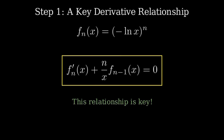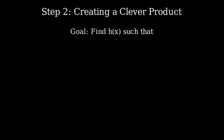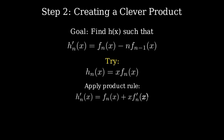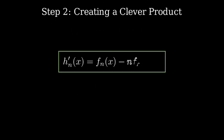Now here's where we get clever. We need to find a function whose derivative gives us exactly what we want: h' = f_n(x) - n · f_{n-1}(x). Let me try defining h as x · f_n(x). Applying the product rule: h_n' = f_n(x) + x · f_n'(x). But from our relationship, x · f_n' = -n · f_{n-1}. So the derivative of our h function is exactly what we wanted. Isn't that beautiful?